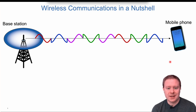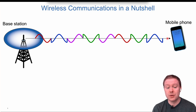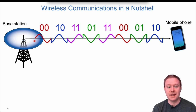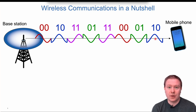Wireless communication is all about sending signals between base stations and mobile phones. When we send a sequence of bits, we map them to different waveforms. For example, we chop up the sequence into two bits at a time: 00 is represented by a red wave, 10 by blue, 11 by purple, and 01 by green. When 11 is transmitted again, we use purple again, and so on. This is the basic mapping of information to radio waves.